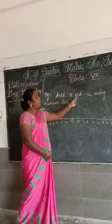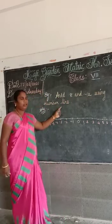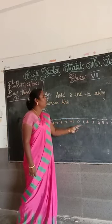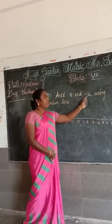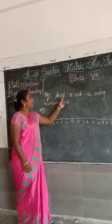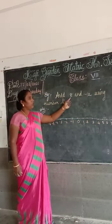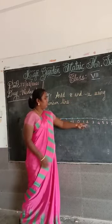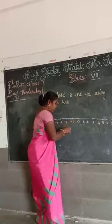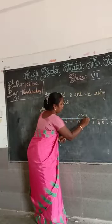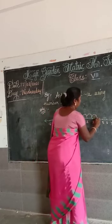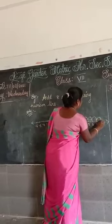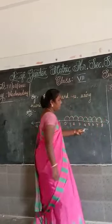First, add 8 and minus 12 using the number line. Since 8 is a positive integer, you move to the right-hand side. You start at zero and take 8 steps to the right: 1, 2, 3, 4, 5, 6, 7, 8. Move 8 steps to the right.